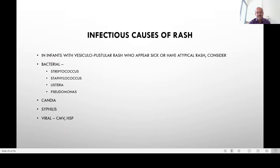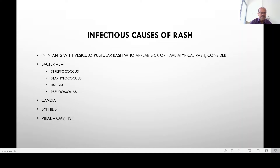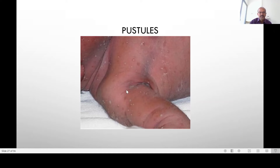We also have to think of infectious causes of rash. In babies with vesiculopustular rash who appear sick or have atypical rash, you consider bacterial lesions. Streptococcus and Staphylococcus can both cause impetigo and pustules. Listeria can present with rash and Pseudomonas infections can present with rash as well. Candida, cutaneous candidiasis, and syphilis and viral infections, especially herpes simplex.